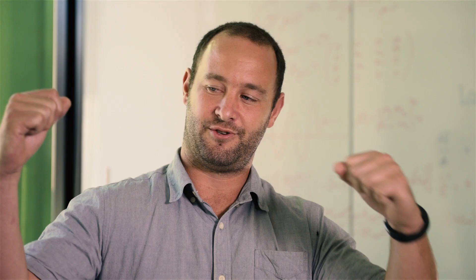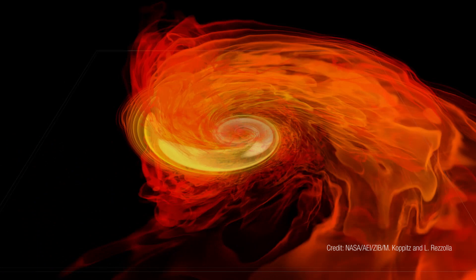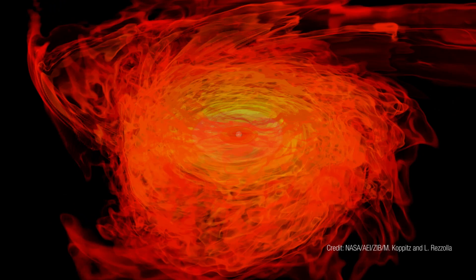Two black holes have spiraled into each other and they've merged. The amount of energy that gets released by that merger is around about 5,000 suns emitting over billions of years, and all of that energy gets released in less than a second.